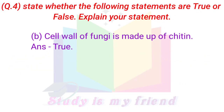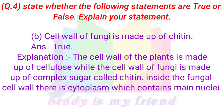B. Cell wall of fungi is made up of chitin. Answer: True. Explanation: The cell wall of plants is made up of cellulose, while the cell wall of fungi is made up of a complex sugar called chitin. Inside the fungal cell wall, there is cytoplasm which contains many nuclei.